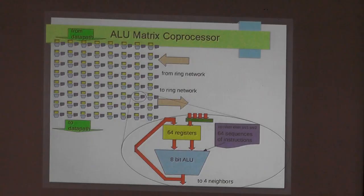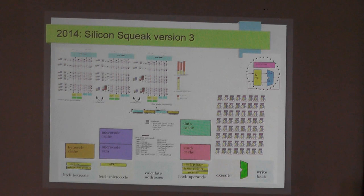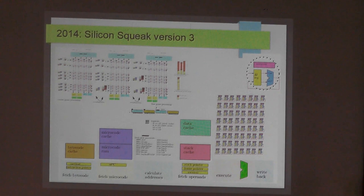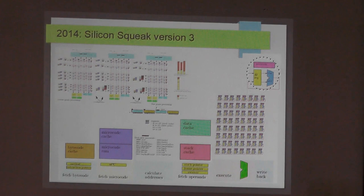I took that one step further: at runtime, since it was an FPGA, I could switch between having lots of simple Silicon Squeaks or a few Silicon Squeaks each with the coprocessor, depending on whether you're running more blue code or yellow code — the FPGA would switch dynamically. I was working with the laboratory for reconfigurable computing at the university, and that made them happy.